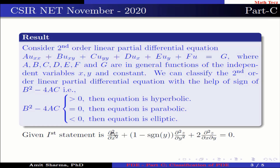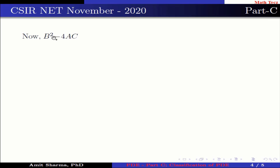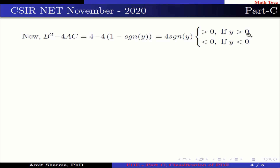For statement one — ∂²z/∂x² + (1 − signum(y)) · ∂²z/∂y² + 2 · ∂²z/∂x∂y = 0 — we identify A = 1, B = 2, and C = 1 − signum(y). Then B² − 4AC = 4 − 4(1 − signum(y)) = 4·signum(y), which is greater than 0 if y > 0 and less than 0 if y < 0.